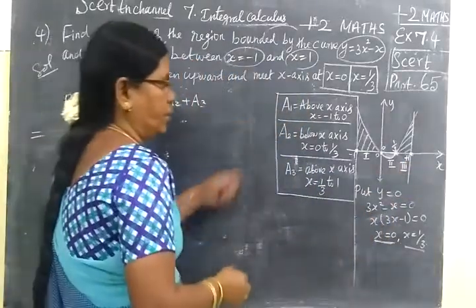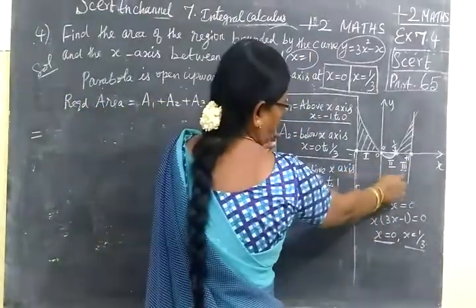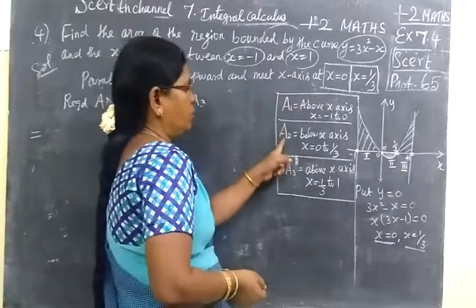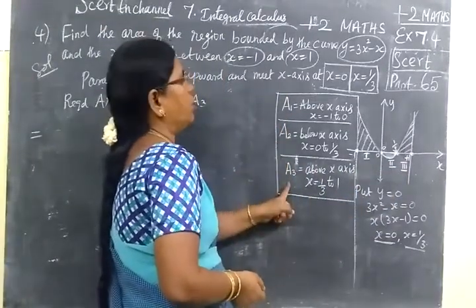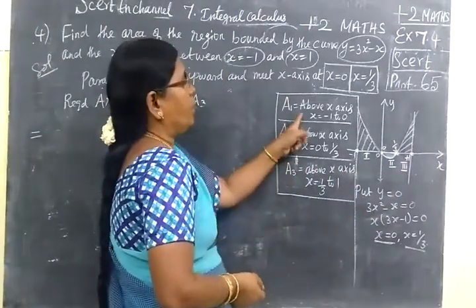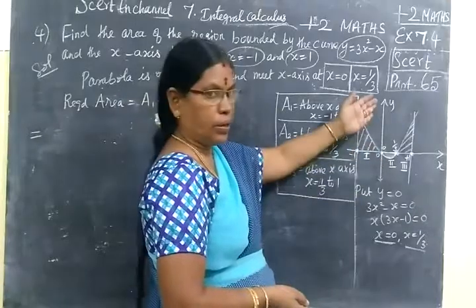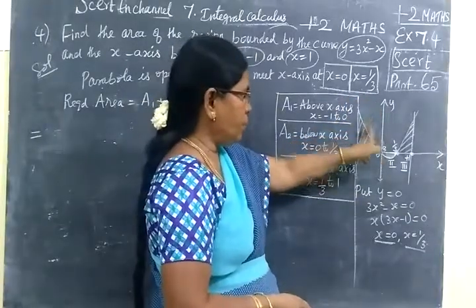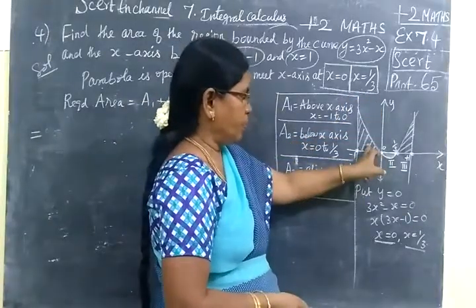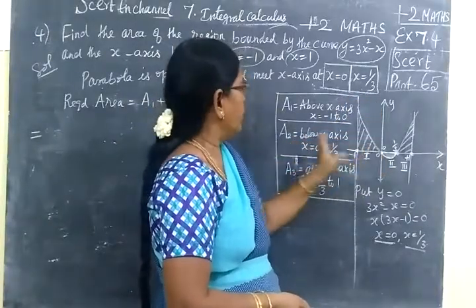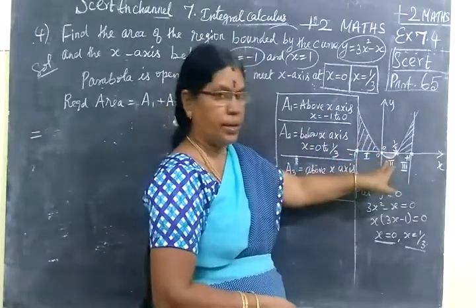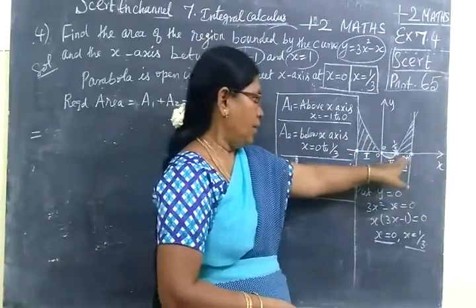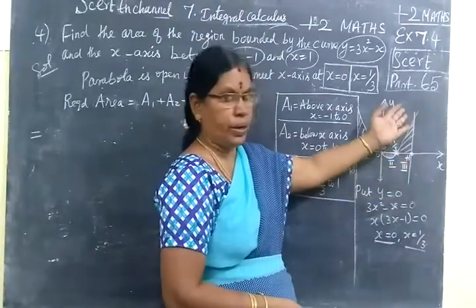There are 3 areas: A1, A2, and A3. A1 is above the curve and the parabola is in a shared pattern. A2 is below the x-axis, and A3 is above the x-axis.